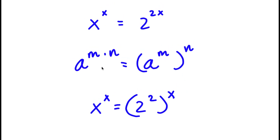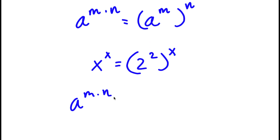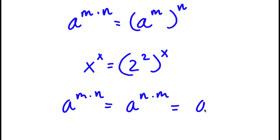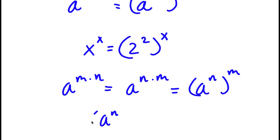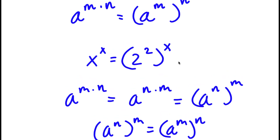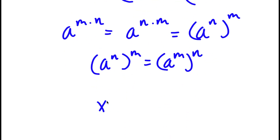Now, a to the power of m times n is also equal to a to the power of n times m — we can switch the order. So if a to the power of m times n equals a to the power of m to the power of n, then a to the power of n to the power of m equals a to the power of n to the power of m. This means 2 to the power of 2 to the power of x is the same thing as 2 to the power of x to the power of 2. So now I have x to the power of x equals 2 to the power of x to the power of 2.